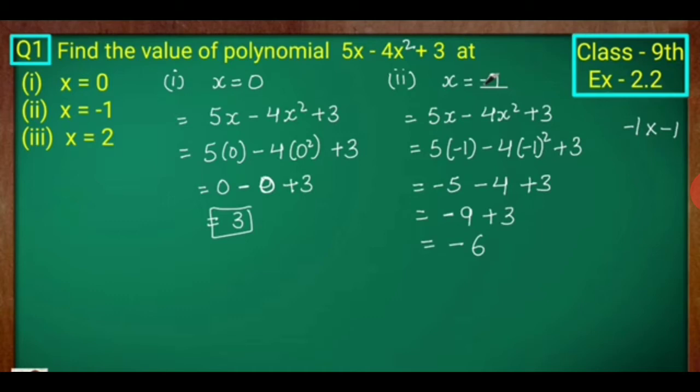When x equals to minus 1, put x equals to minus 1 in place of x. This will be 5 times minus 1, minus 4 times (minus 1) whole squared, plus 3. When minus 1 multiplied by minus 1, this will be plus 1. When we multiply 5 by minus 1, this will be minus 5. And when we multiply minus 4 by plus 1, this will be minus 4 plus 3. Minus 5 and minus 4 gives minus 9, and minus 9 plus 3 will be minus 6.